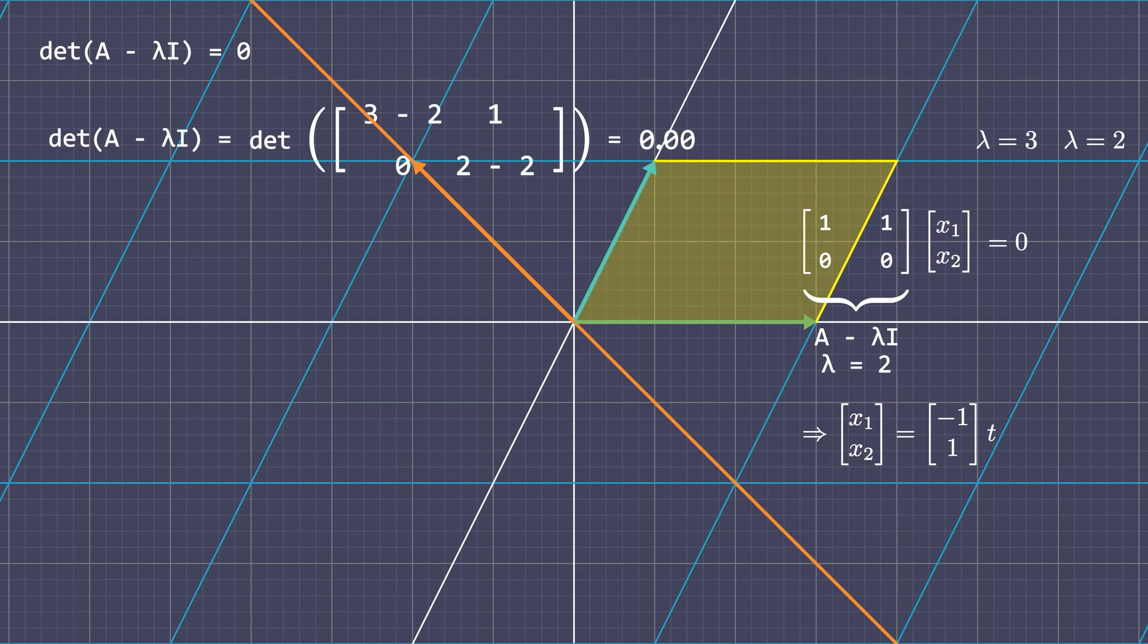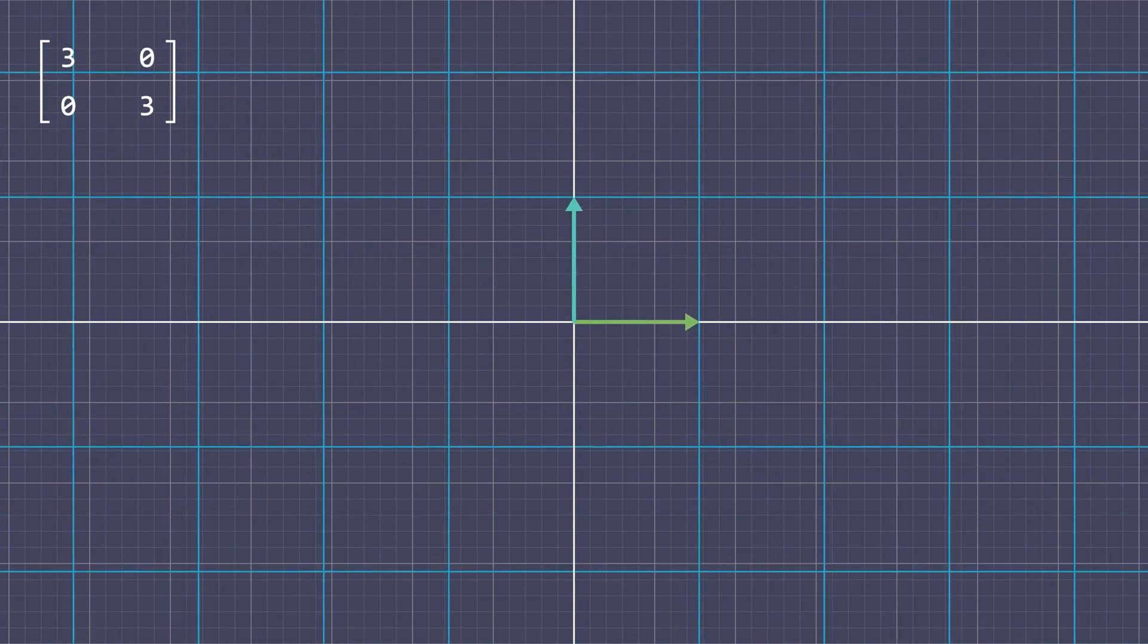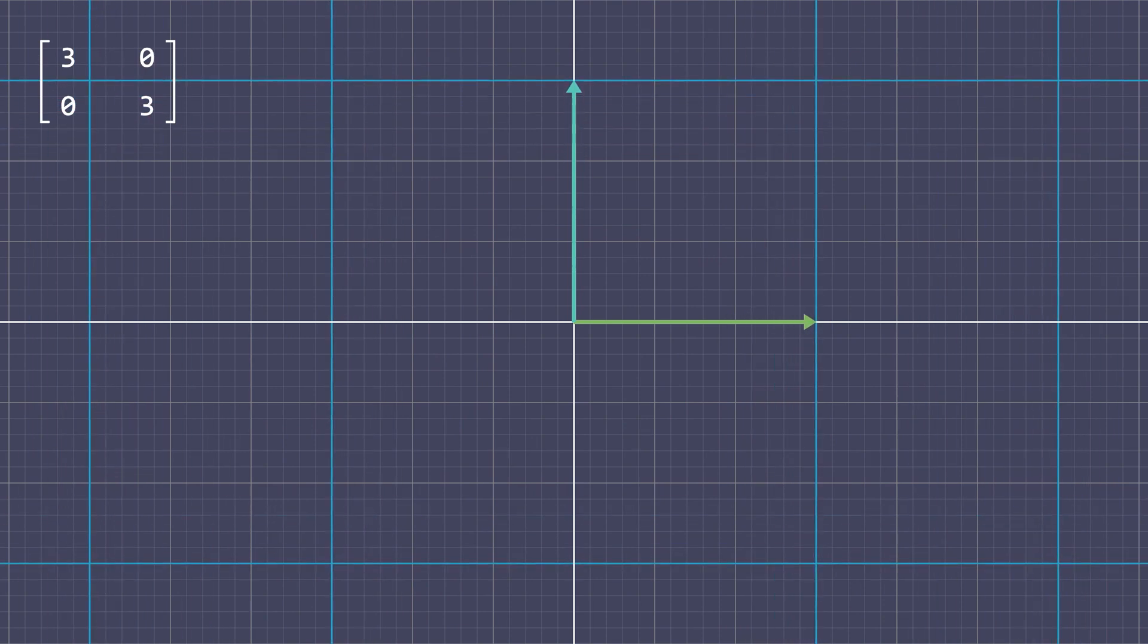Now, before moving on to the next topic, here is a thought experiment for you. If matrix A scales the space by 3, what are the eigenvalues and the eigenvectors? It should be easy to answer that the only eigenvalue is 3, but every vector in the plane gets to be an eigenvector with an eigenvalue of 3.